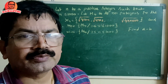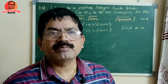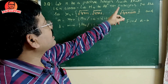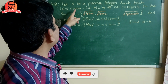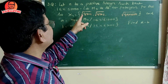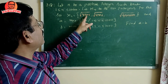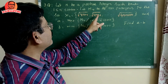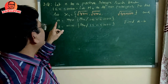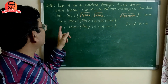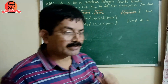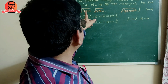Our third question: let n be a positive integer such that 1 ≤ n ≤ 1000. Let mn be the number of integers in the set Xn, where Xn is {√(4n+1), √(4n+2), ..., √(4n+1000)}. A is the maximum of all mn's, B is the minimum of all mn's, and we have to find A minus B.